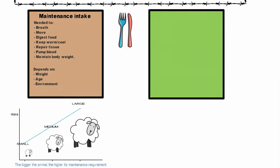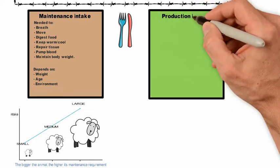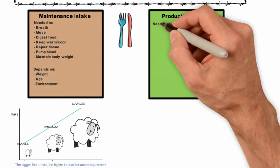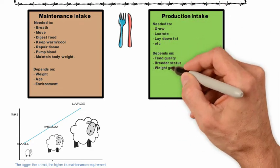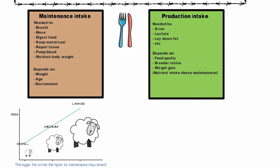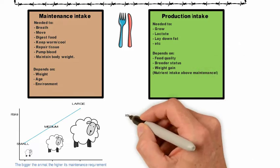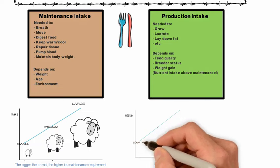Your second part of intake is its production intake. This is what an animal needs to be able to grow, lactate, lay down fat and produce. That depends on the quality of feed it's got, its current breeder status, and its current weight gain.